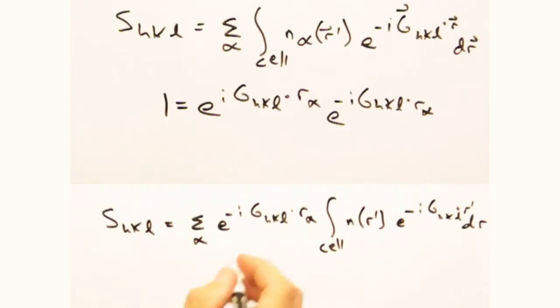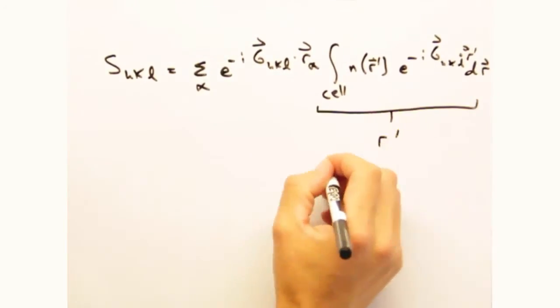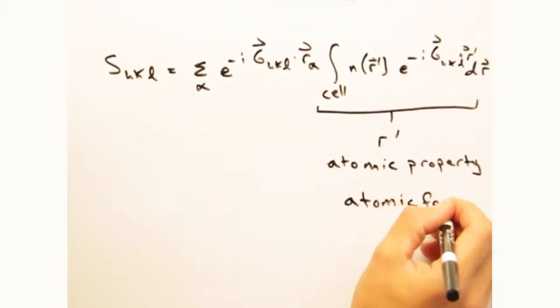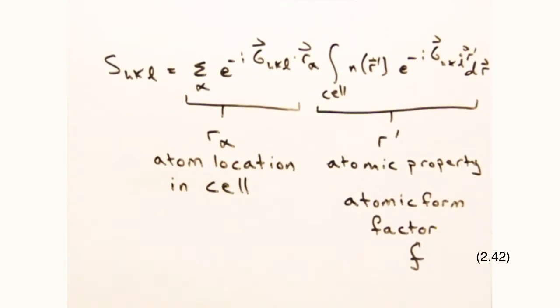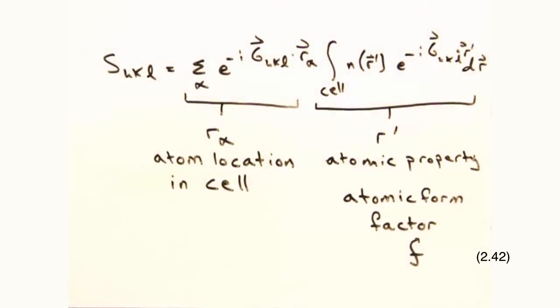One, into terms that deal with the scattering from each atom, which we condense into one term called the atomic form factor. And two, this term here that gives where the atom is located within the cell. To really show this technique, let's go through a couple of examples.